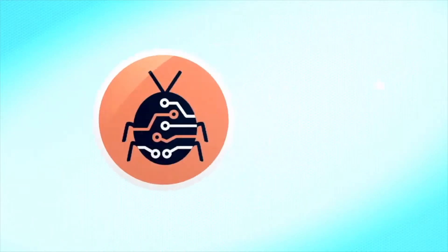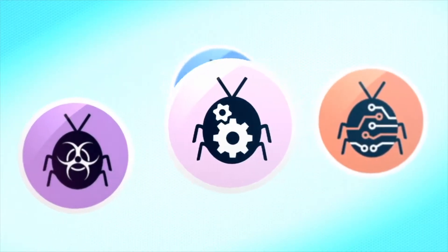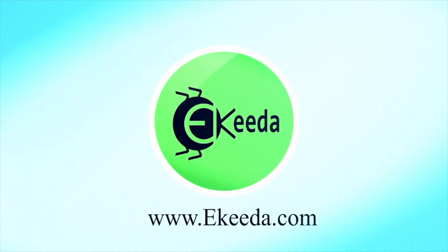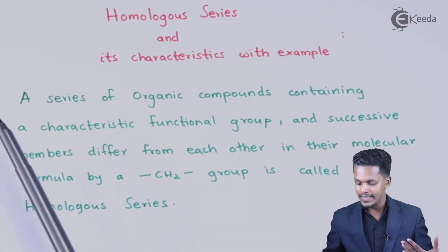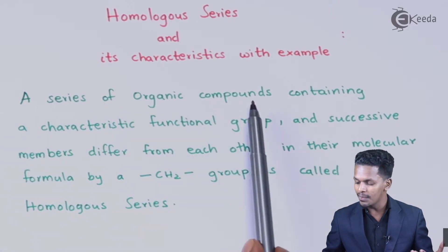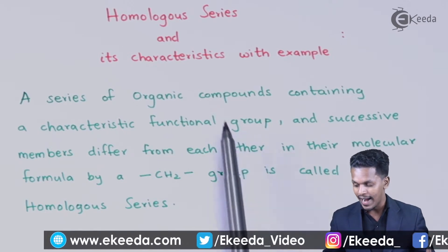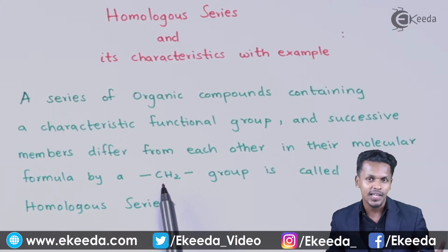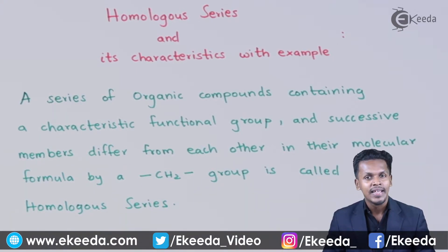So the definition is as follows: a series of organic compounds containing a characteristic functional group, where successive members differ from each other in their molecular formula by CH2, which is known as the methylene group, is called a homologous series.